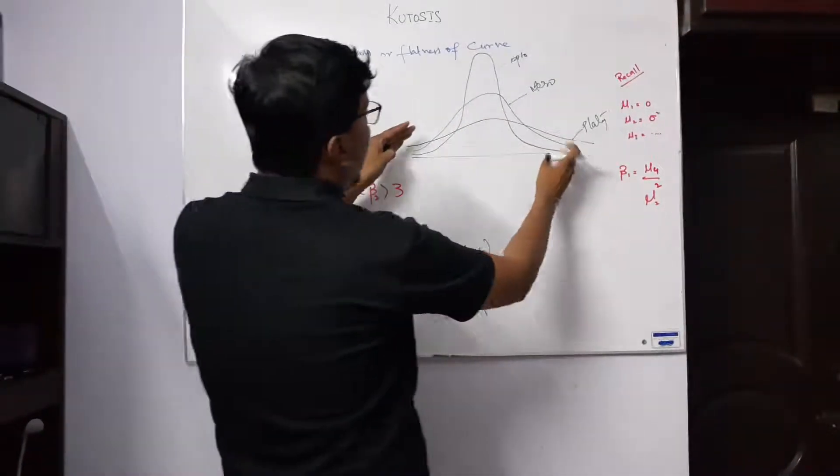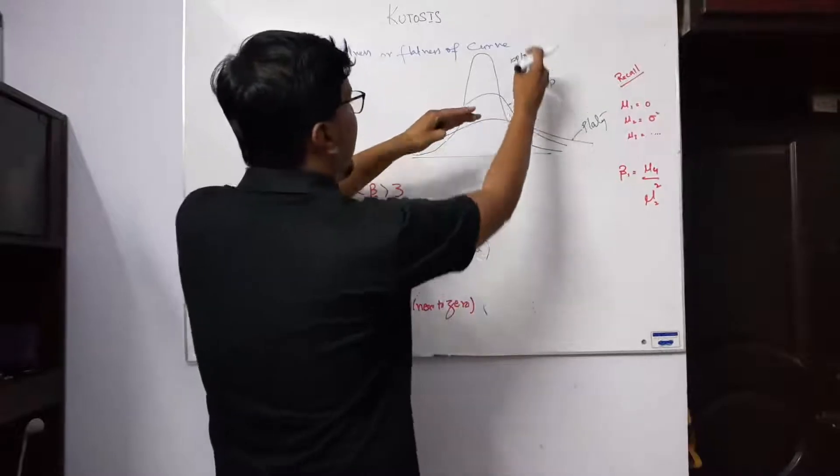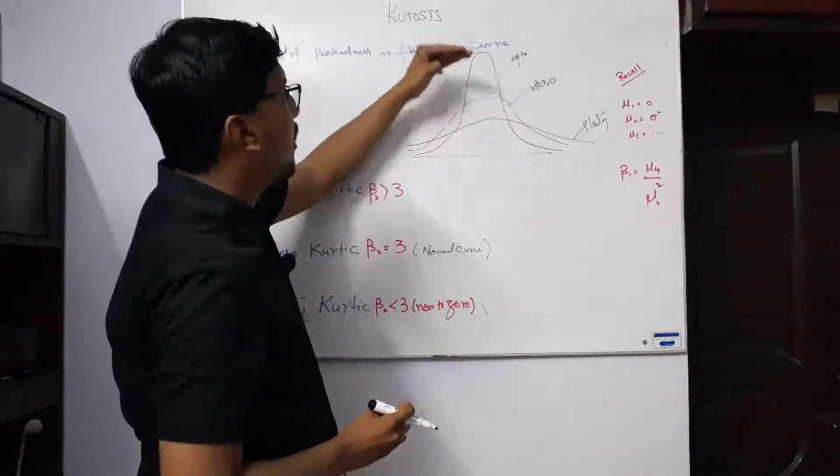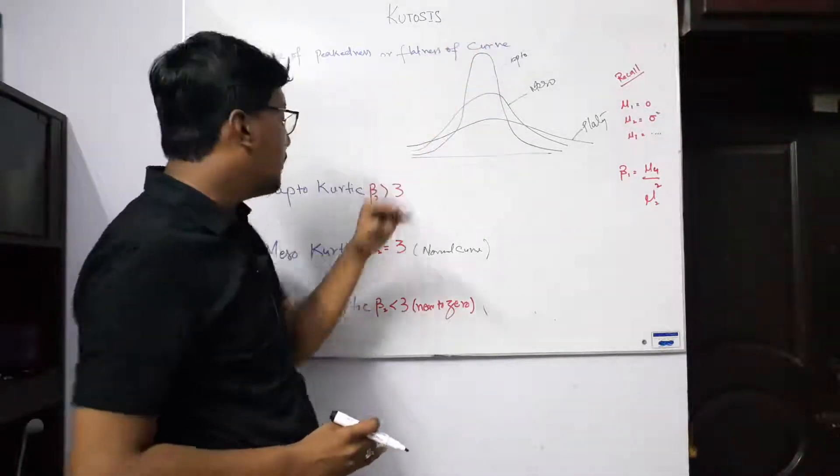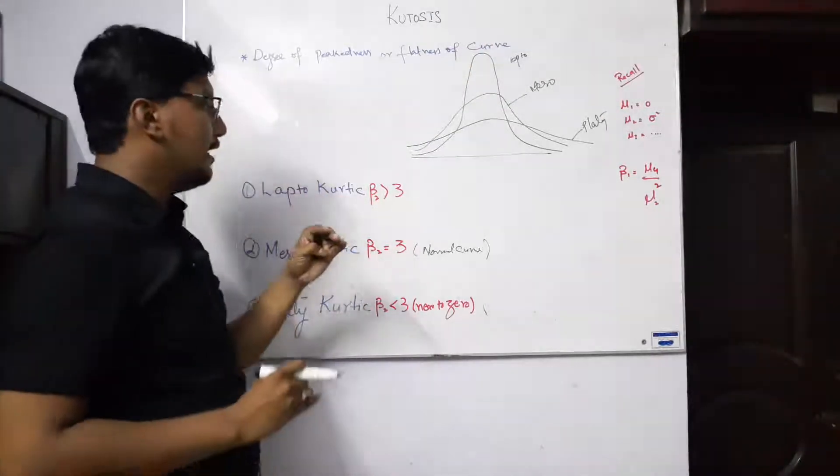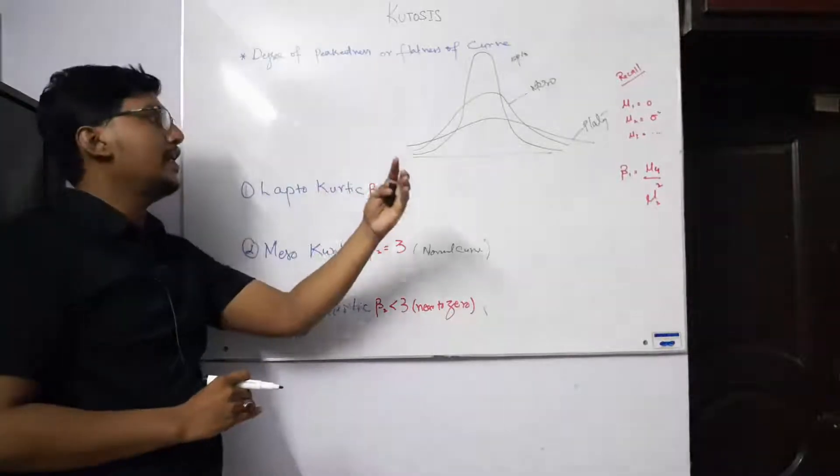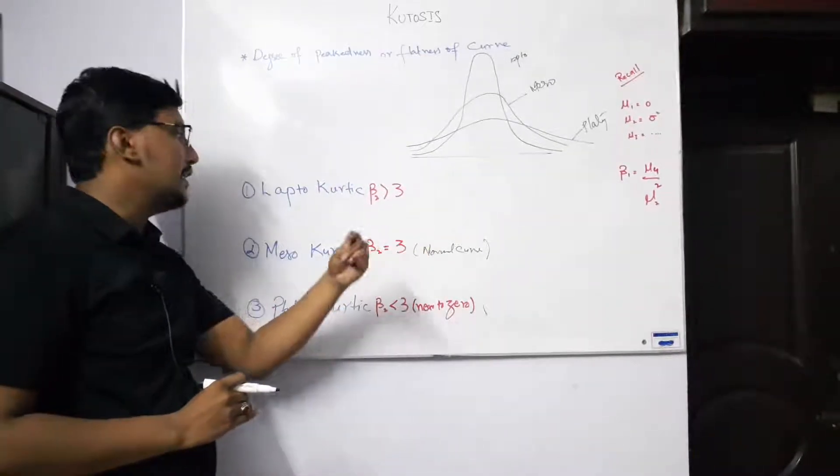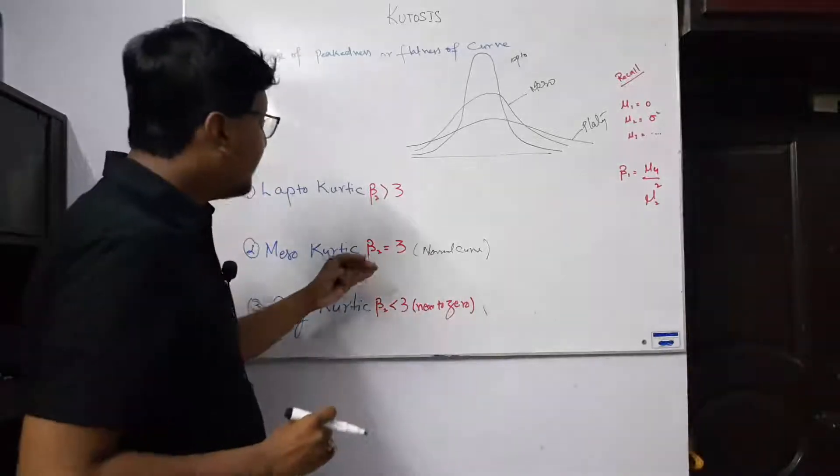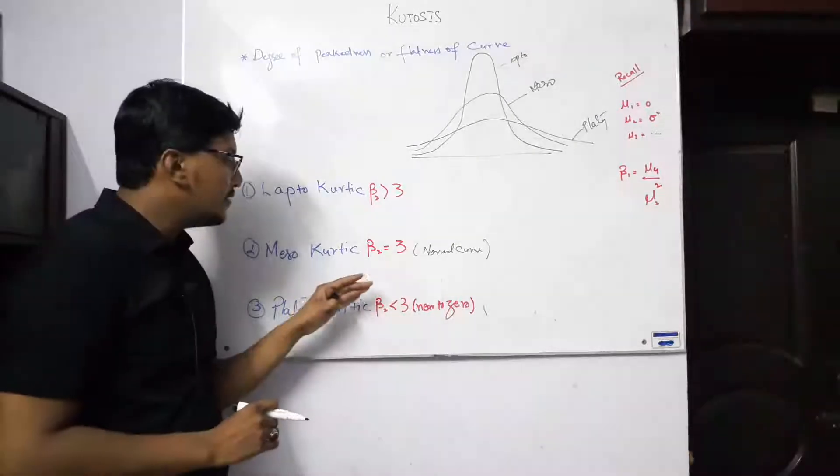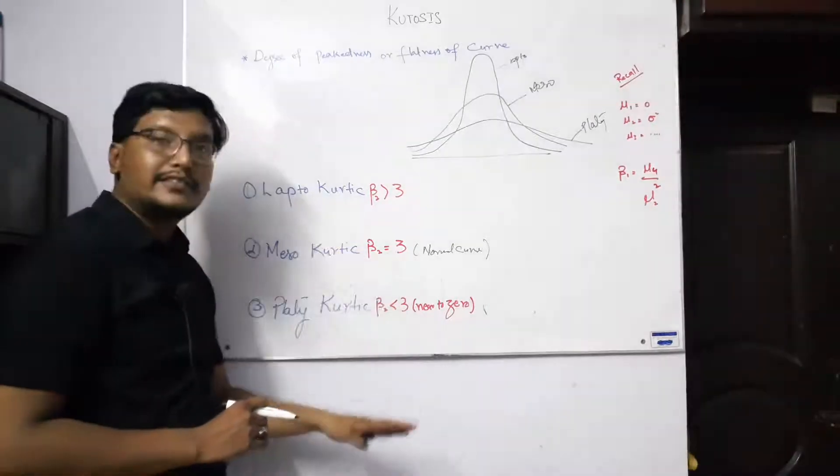We are between meso and lepto. Now if there is more than value 3, 4, 5, we can say that we are near to leptokurtic. Exactly 3, so mesokurtic.